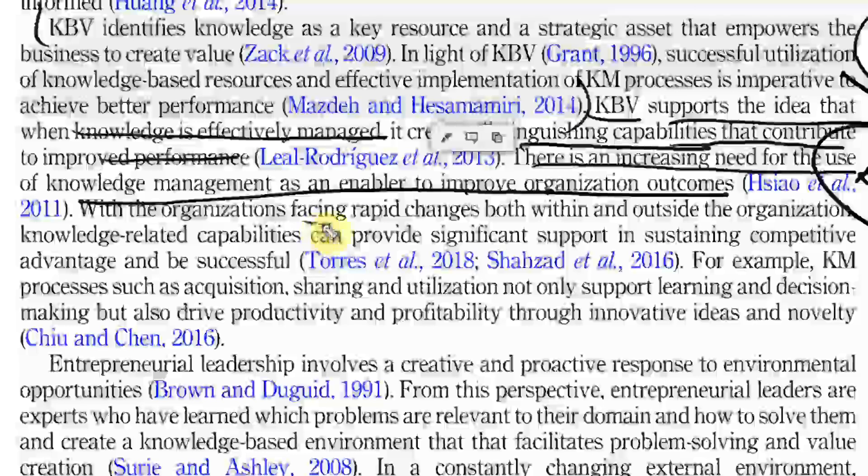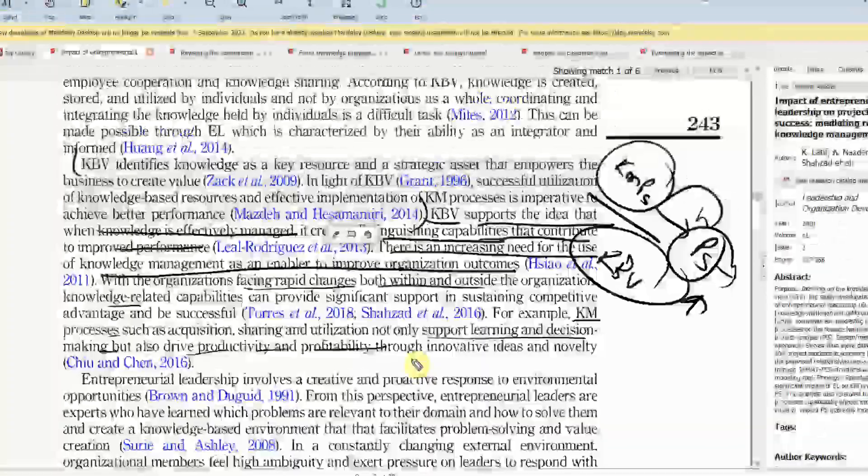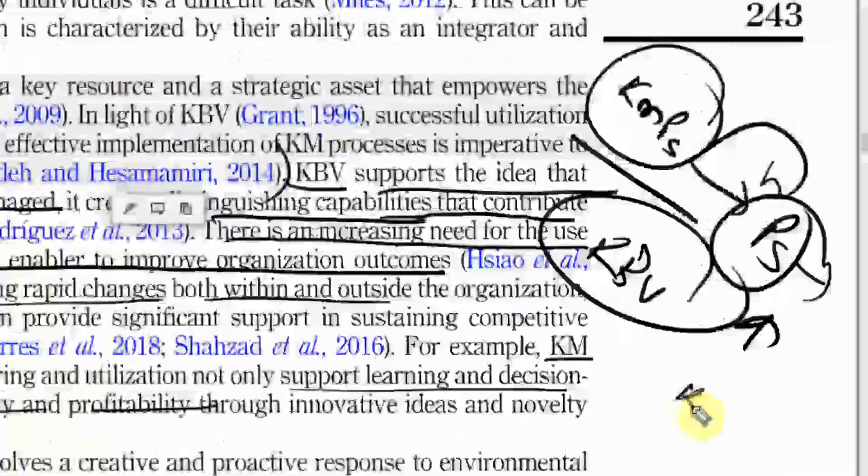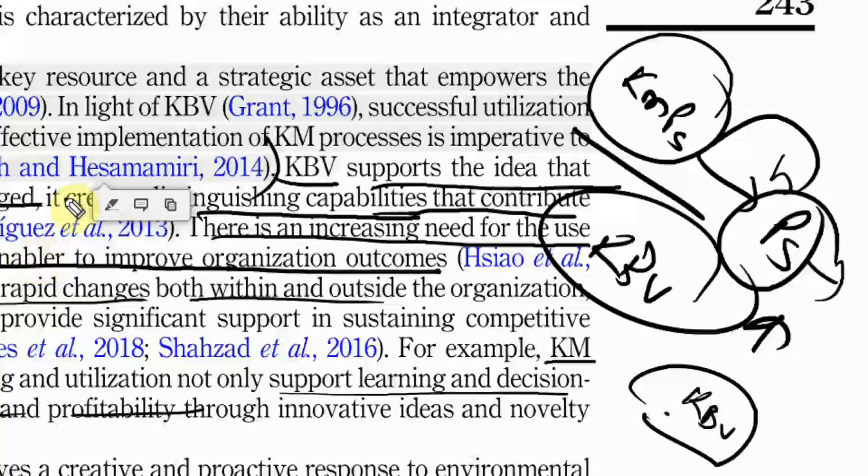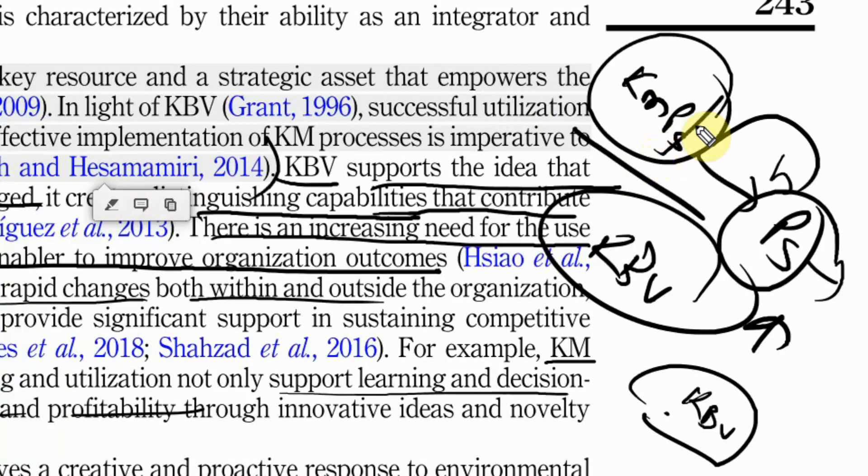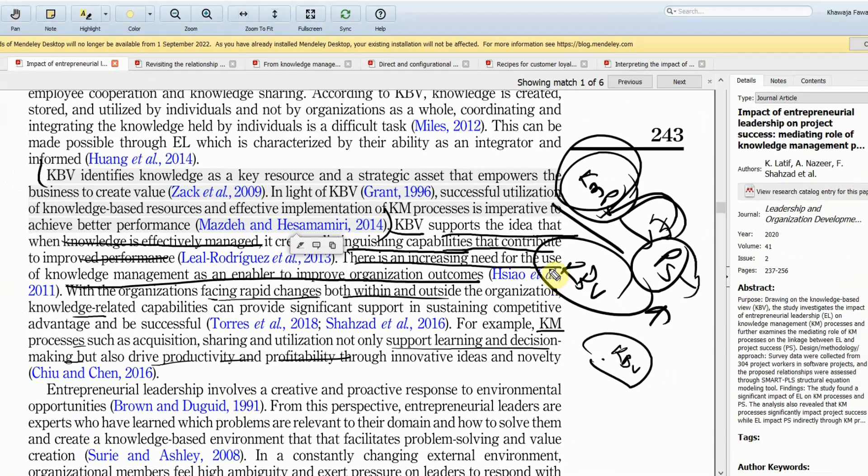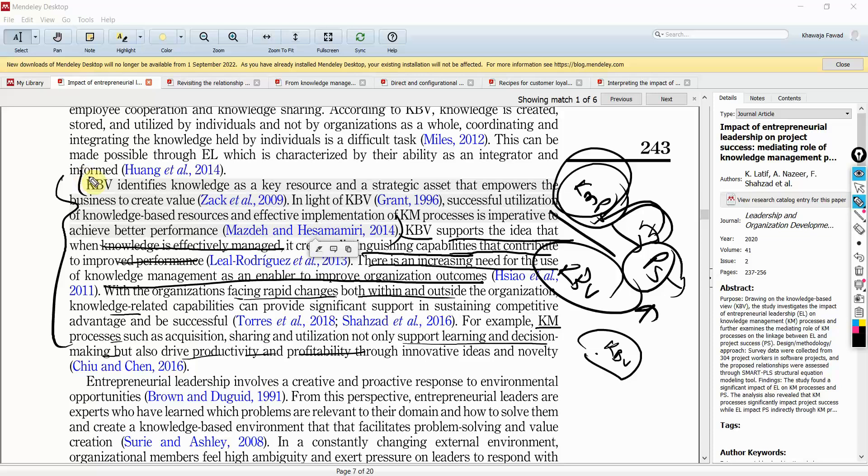This is an organizational outcome. When organizations are facing rapid changes both within and outside the organization, knowledge-related capabilities can provide support. Now, for example, KM processes such as these here can drive productivity and profitability. So, knowledge-based view is of the opinion that knowledge is a critical resource and that as a critical resource, if managed effectively, can help improve the organization's chances for success. So, this is how you are using knowledge-based view to build an argument to link these variables.